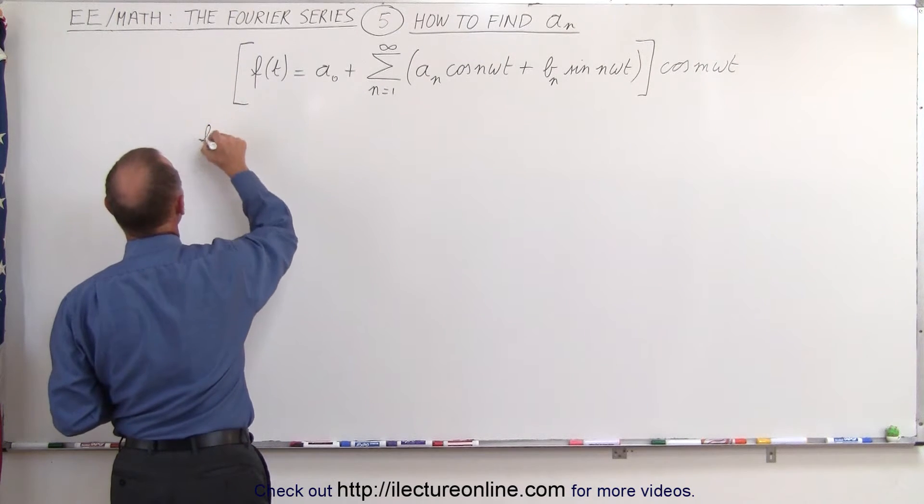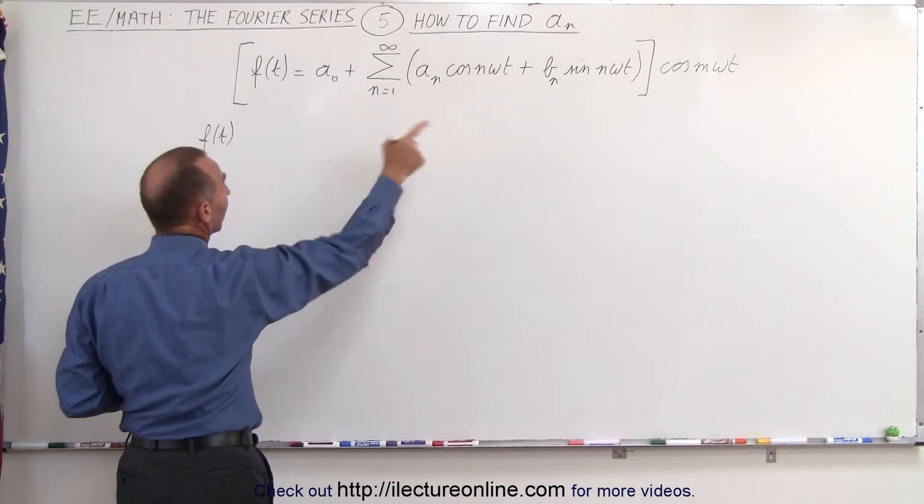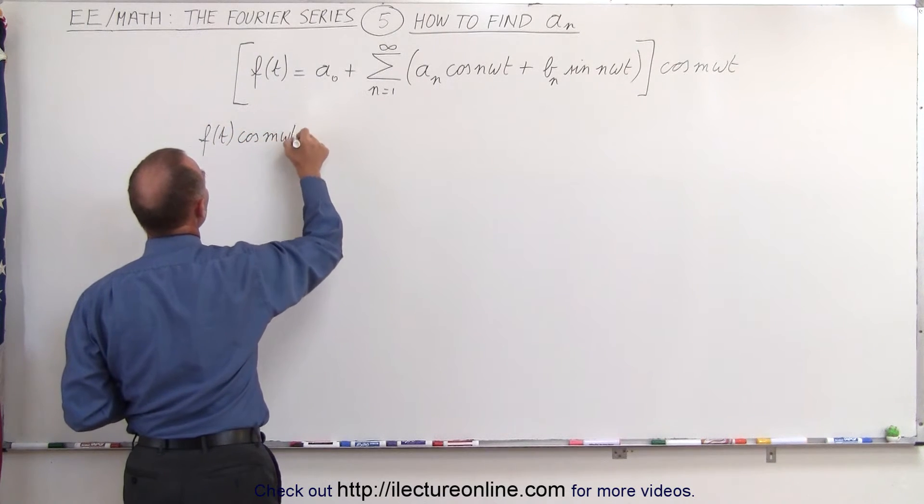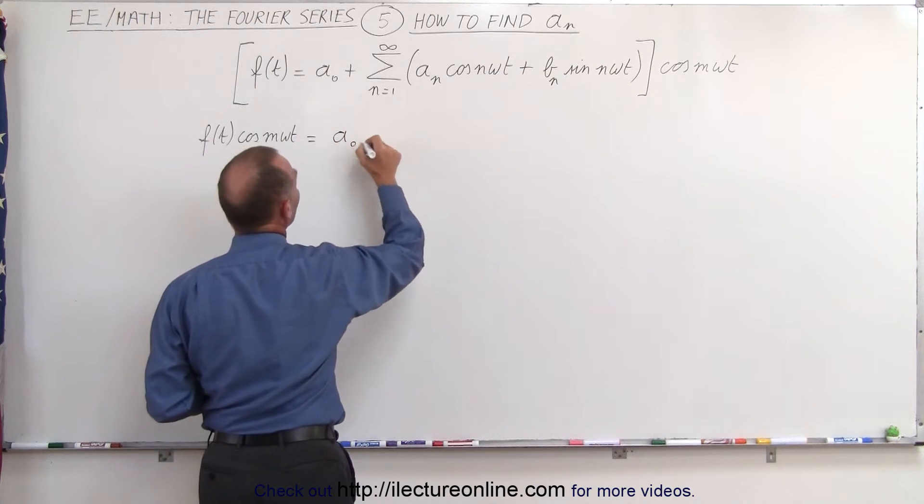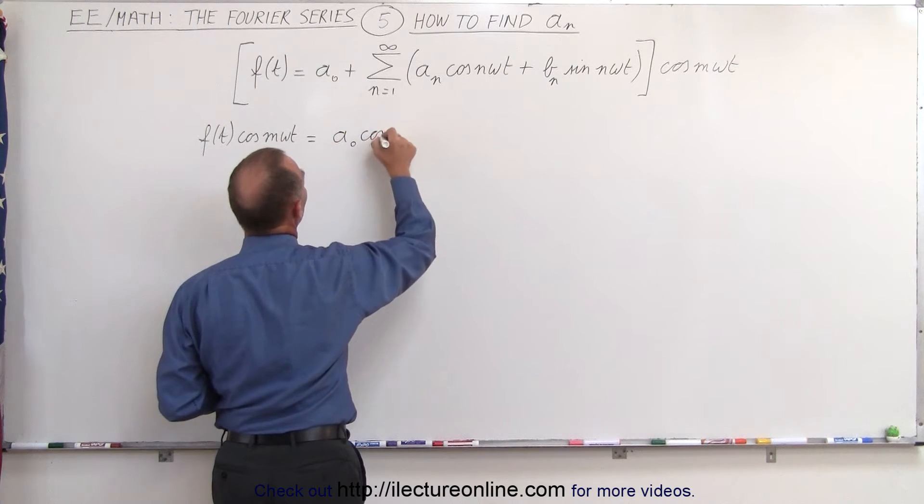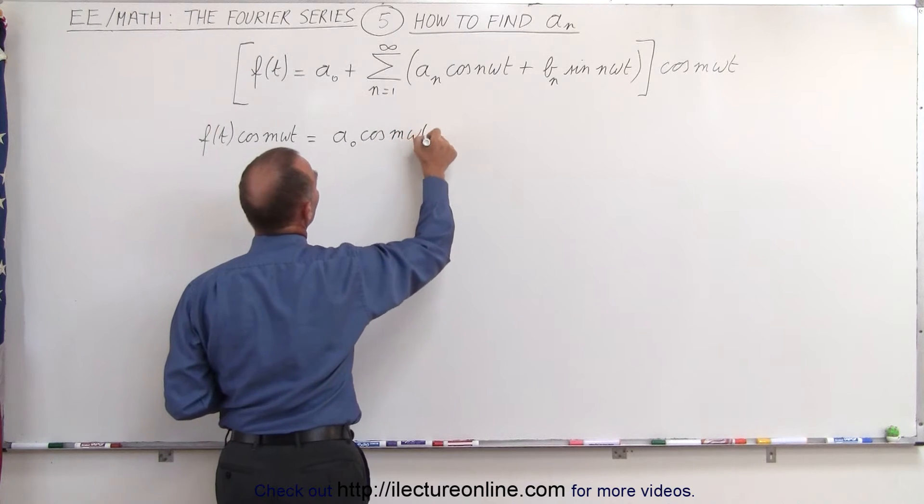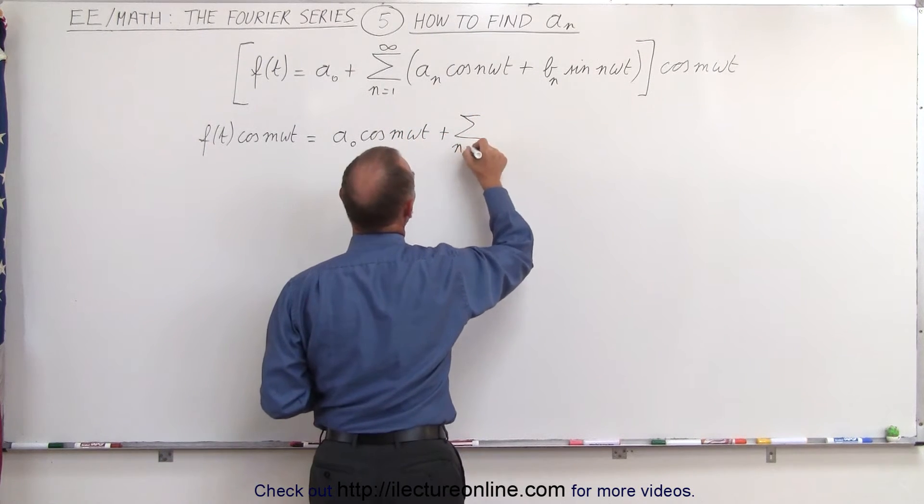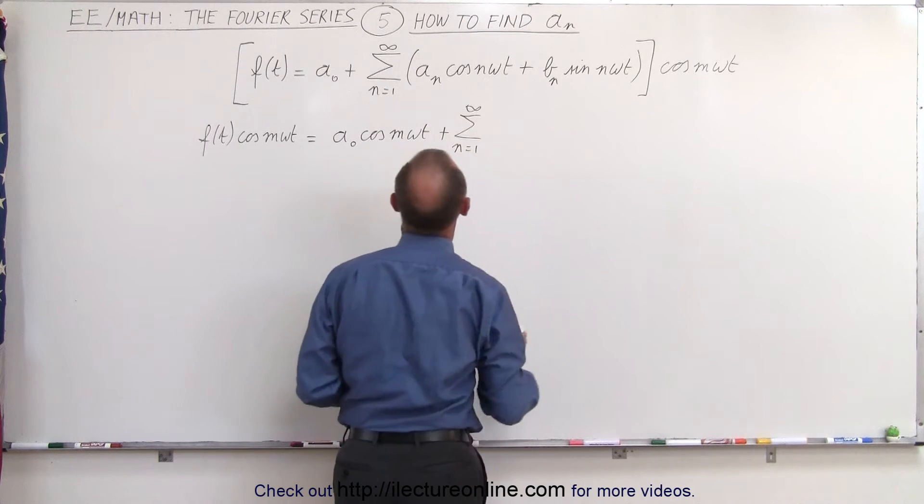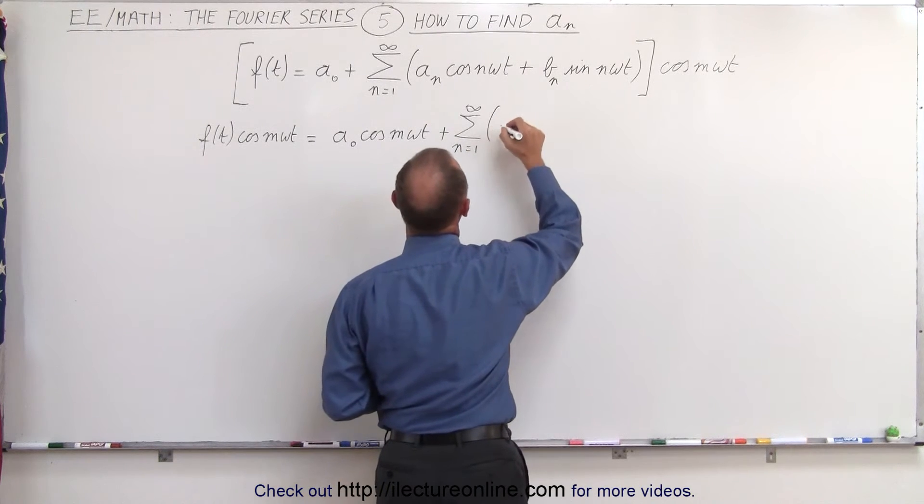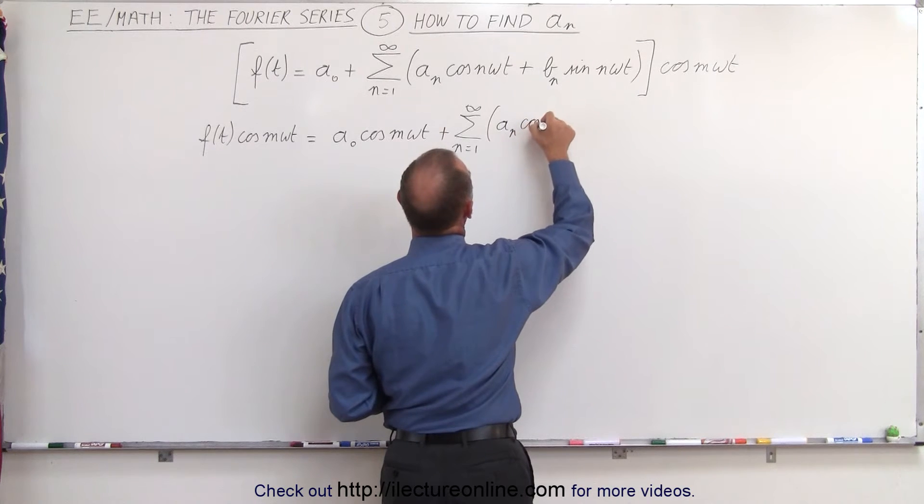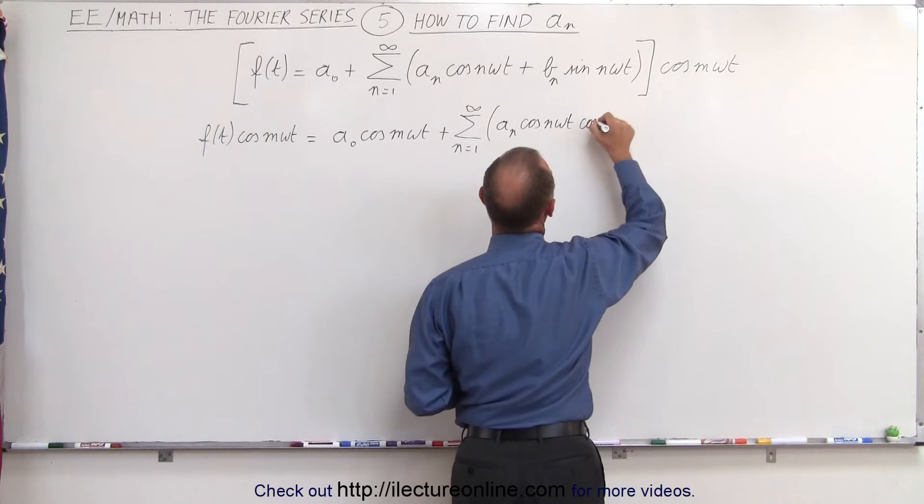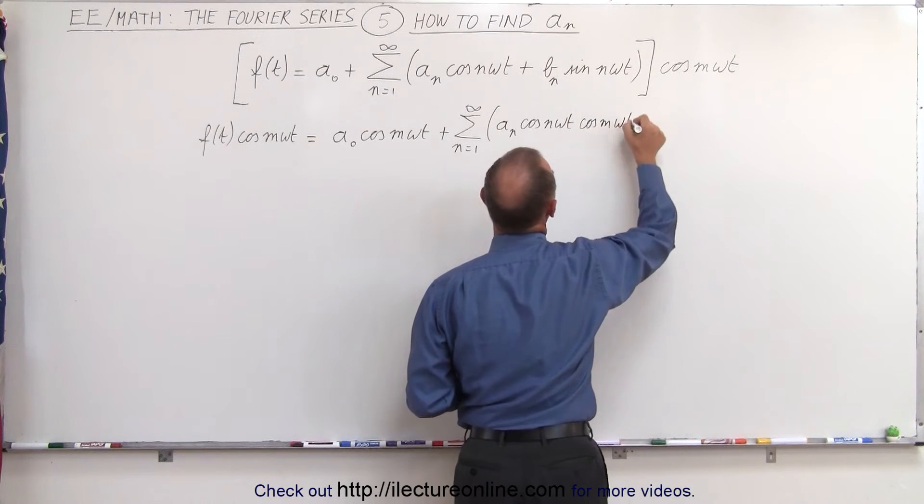So on the left side, we get f of t multiplied times the cosine of m omega t is equal to a sub n equals 1 to infinity of, here we'll get a sub n times the cosine of n omega t times the cosine of m omega t.